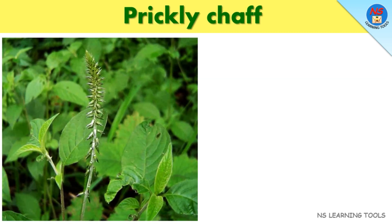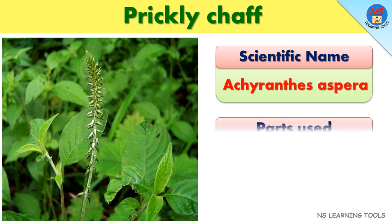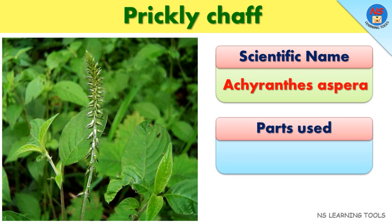Prickly chaff. Scientific name: Acuranthes aspera. Parts used: Leaves, root.